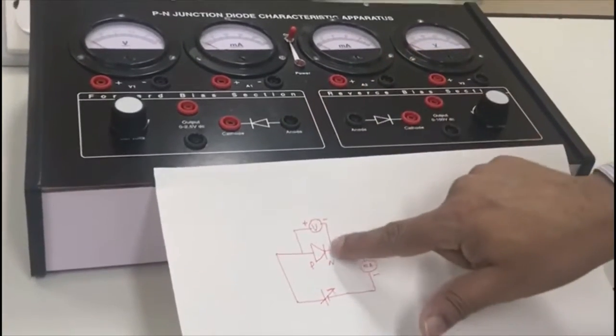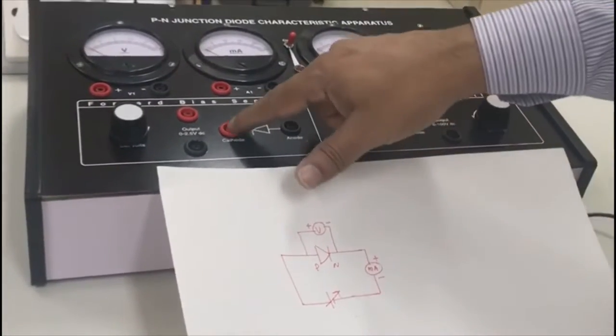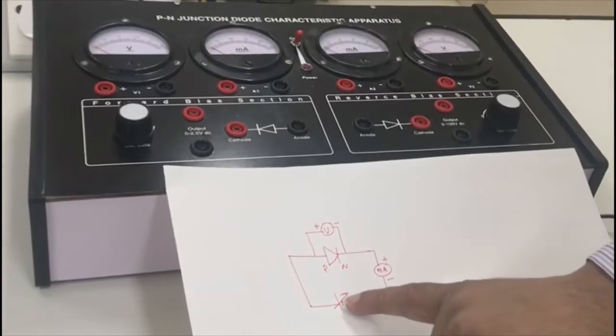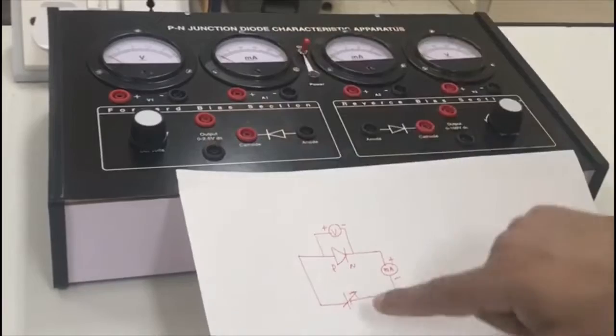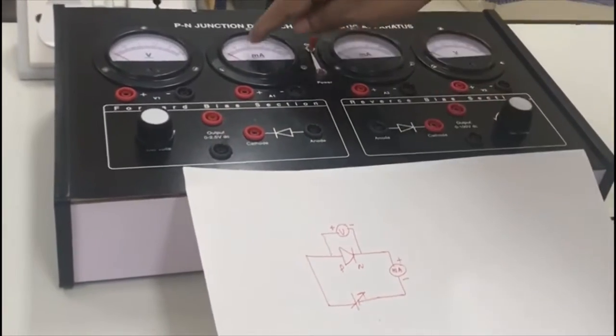The straight line side is N. The cell has red as positive and black as negative. We have a milliammeter and voltmeter, each with plus and minus terminals.